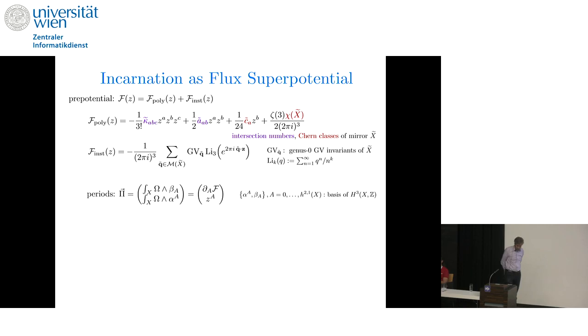Now, what does this have to do with the flux superpotential? Well, if we introduce the periods, which are the integrals of the three zero form over a basis of three cycles, and if we remind ourselves that the flux superpotential is the pairing of the three form flux with omega, we can also write the flux superpotential as a pairing of a period vector with a vector of quantized fluxes. So if we can compute the periods, or the prepotential, and we know the quantized fluxes, then we know the flux superpotential. So the task is to compute the periods.